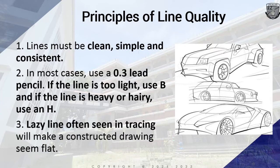Number two: in most cases, use a 0.3 lead pencil. If the line is too light, use B. If the line is too heavy or hairy, use an H. Primarily we will be using a 2B pencil as our drawing material. Number three: lazy lines often seen in tracing will make a constructed drawing seem flat. Use both top and bottom line to help avoid them.